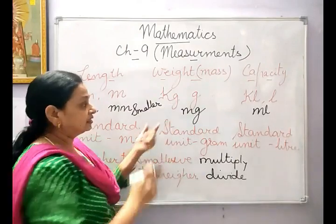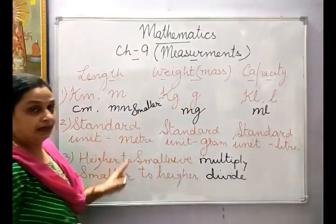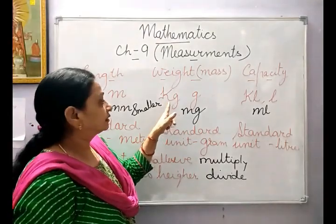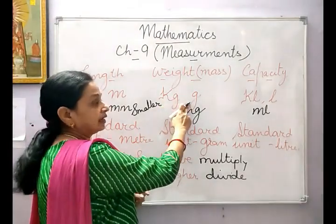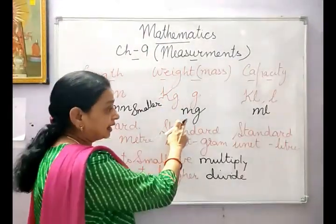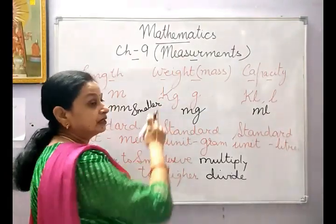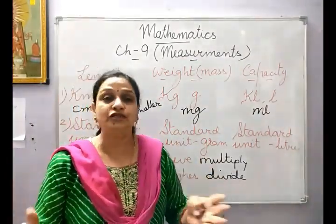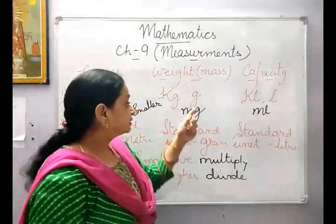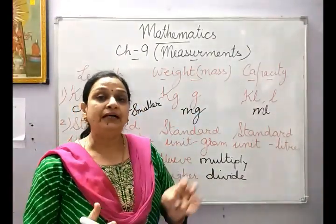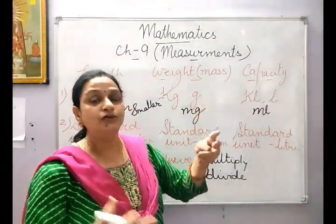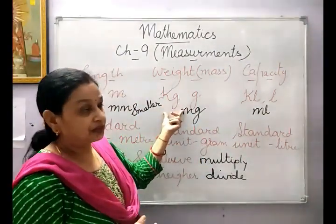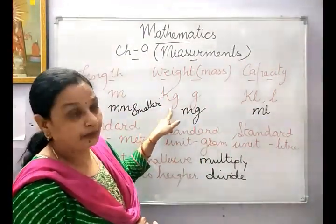Similarly, the units used for weight are kilogram, gram, and milligram. Kilogram is used for heavier weights — bari cheez ka wazan. Gram is normally not used for heavier things; only kilogram is used. So kilogram is used for higher weights.